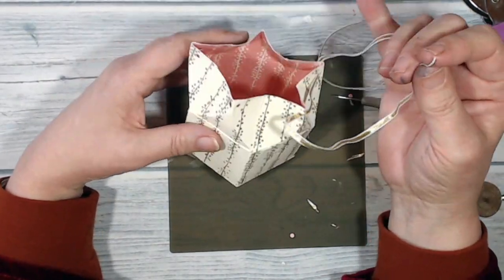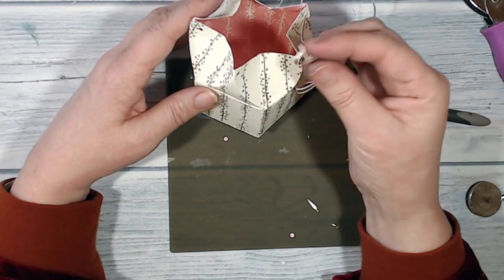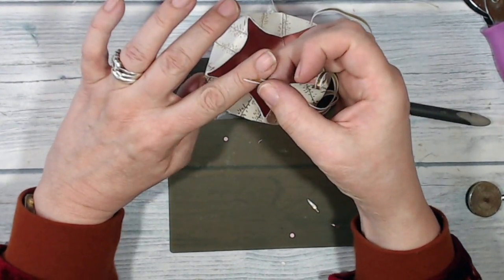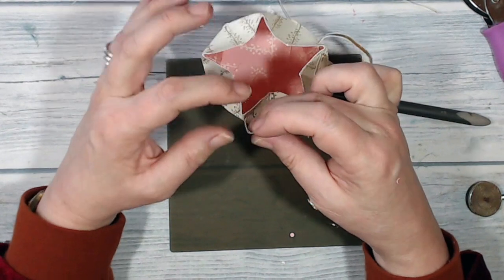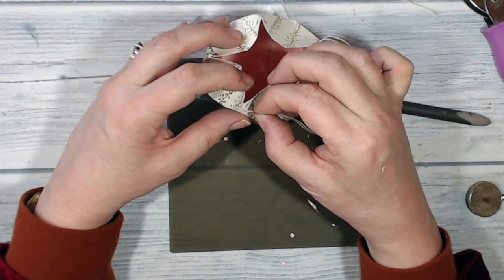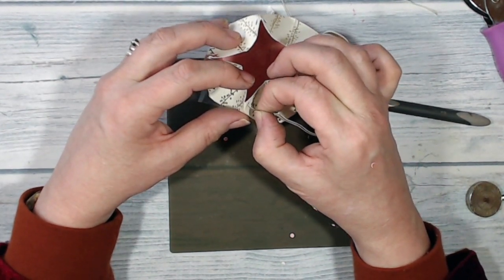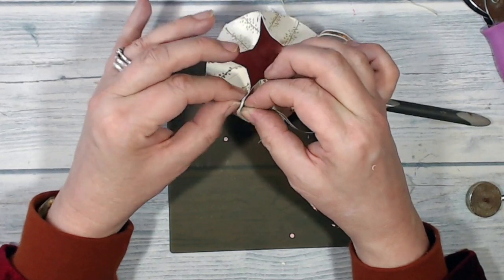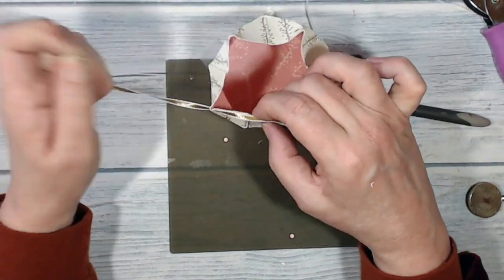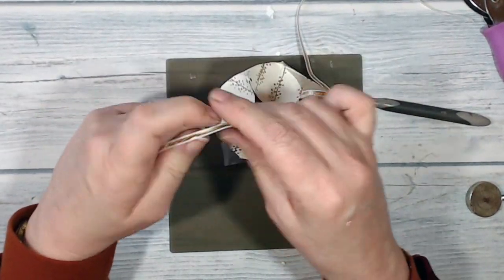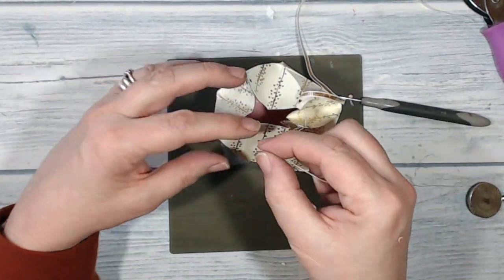I've got some one-eighth inch gold ribbon which I'm threading through each of those holes I just made. To help me, I've cut the end of my ribbon onto a very sharp angle. Now it will fray, so I'm probably going to need to keep doing that as I go along. Bear with me because this is probably going to take some time.